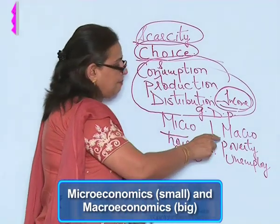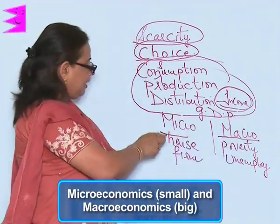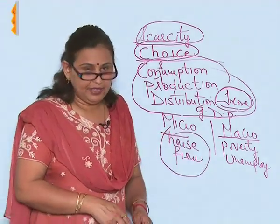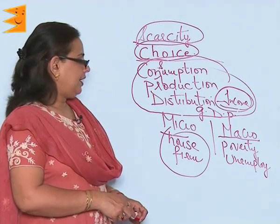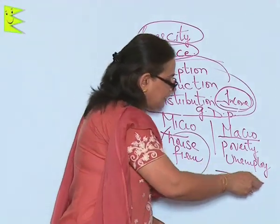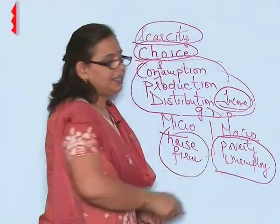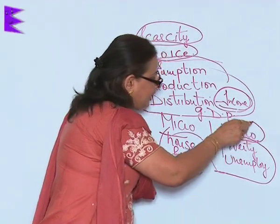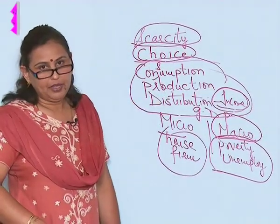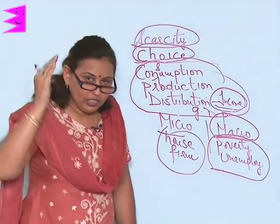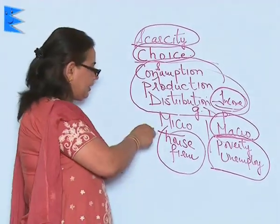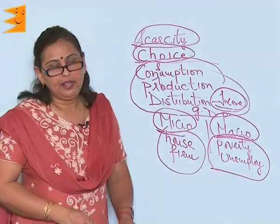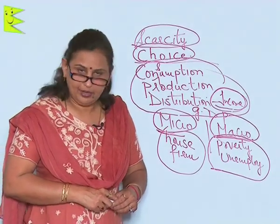Micro means small and macro means big. In micro, we include the household, the firms, the factories. Whereas in macro, it is the study of poverty, unemployment, health activities, and so on — something which is associated with a large number of the population. What is associated with just a few handful of people is the study of microeconomics.